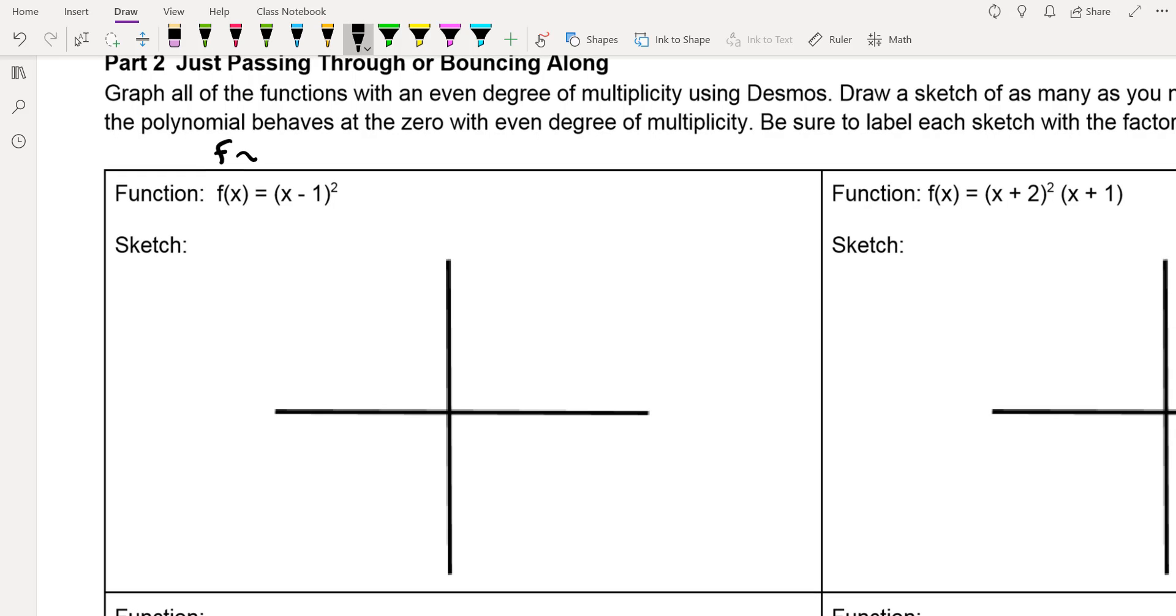So in vertex form, remember, that's f(x) = a(x - h)² + k. And the h and the k, they give you the vertex, right? And remember, flip the sign on there. And that would be positive one.